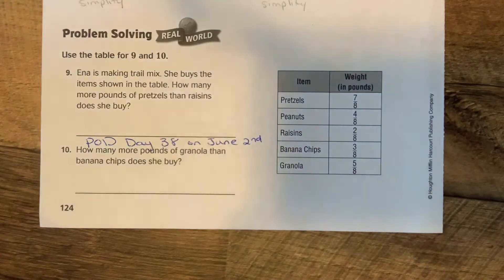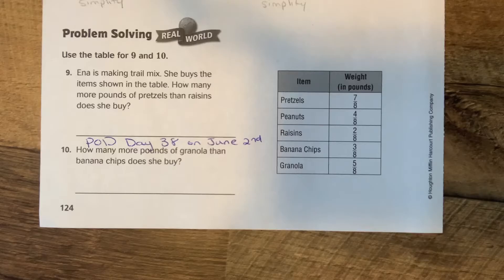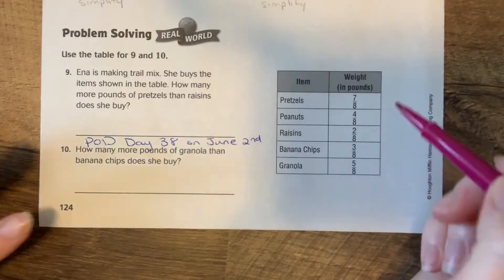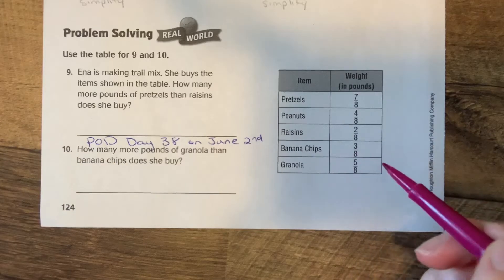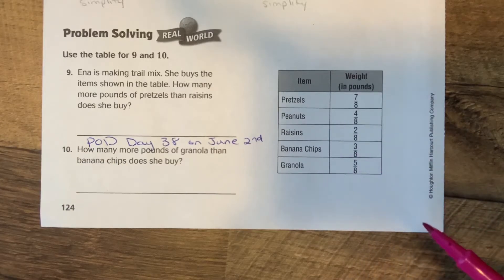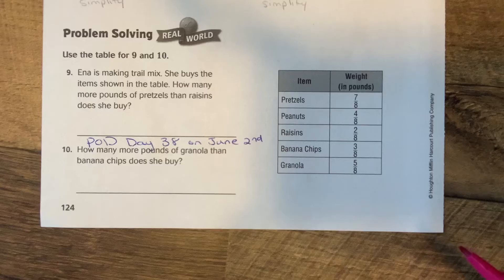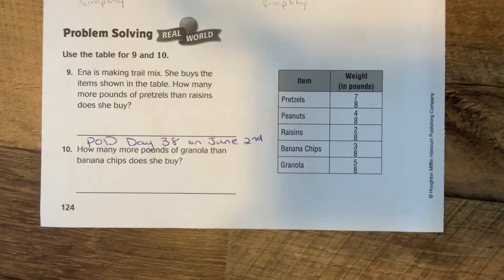Now, your wording on your actual problem on your daily schedule was a little bit different, because in case you lost your book, you do not have this table. So, the wording that we put in your daily schedule said: Ina is still buying things for her trail mix.